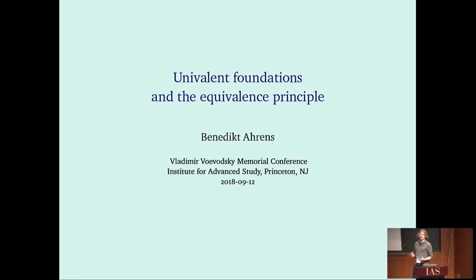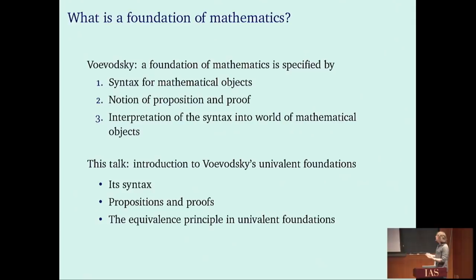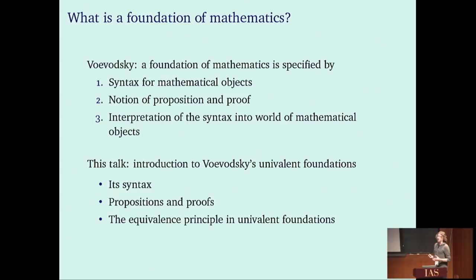What is the foundation of mathematics according to Vladimir? It has three ingredients: first, a syntax for mathematical objects; second, a notion of proposition and proof to reason about those objects; and third, an interpretation of the syntax and propositions into a world of mathematical objects. André Joyal yesterday talked about the third point, so in my talk I will present the syntax of the univalent foundations and its notion of proposition and proof, then explain how the equivalence principle holds for a variety of mathematical structures.